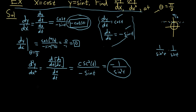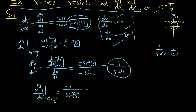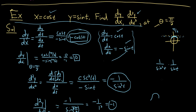Evaluating the second derivative at t equals pi/2: negative 1 over sine(pi/2) cubed equals negative 1 over 1, which is negative 1. This makes sense — the curve is concave down at pi/2. So the slope is 0 and the concavity is negative — everything agrees with what we'd expect graphically.